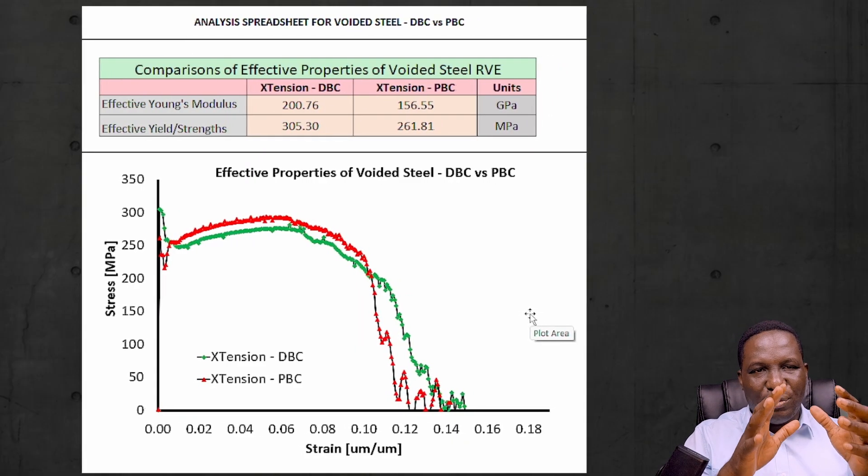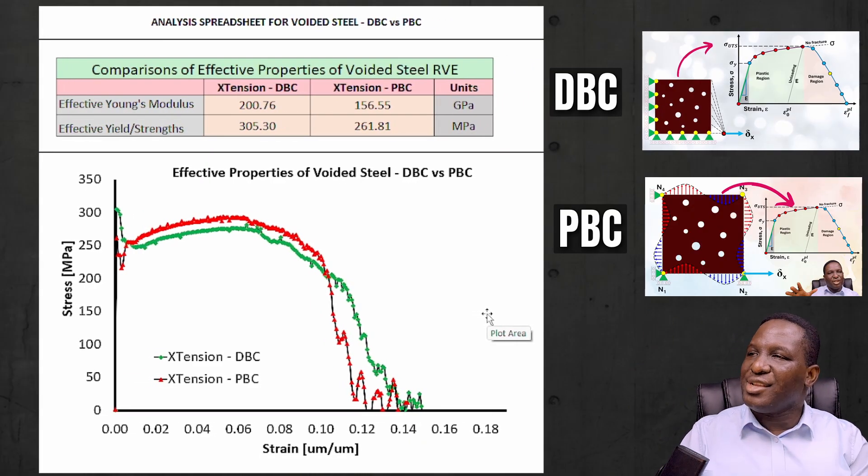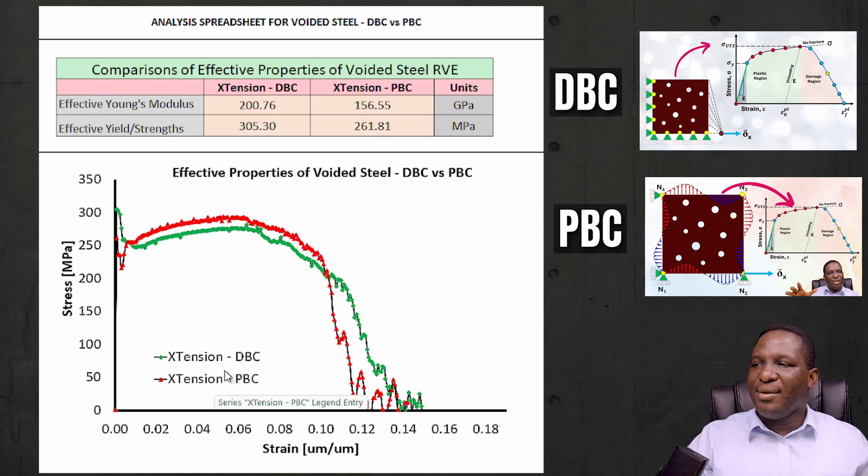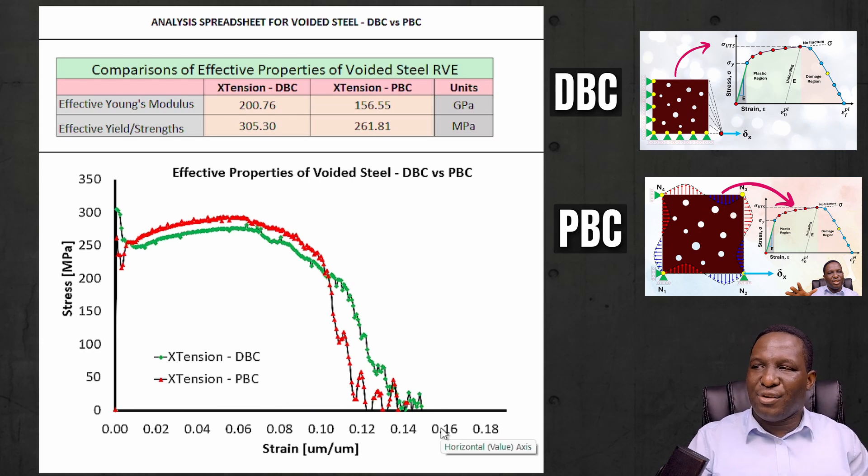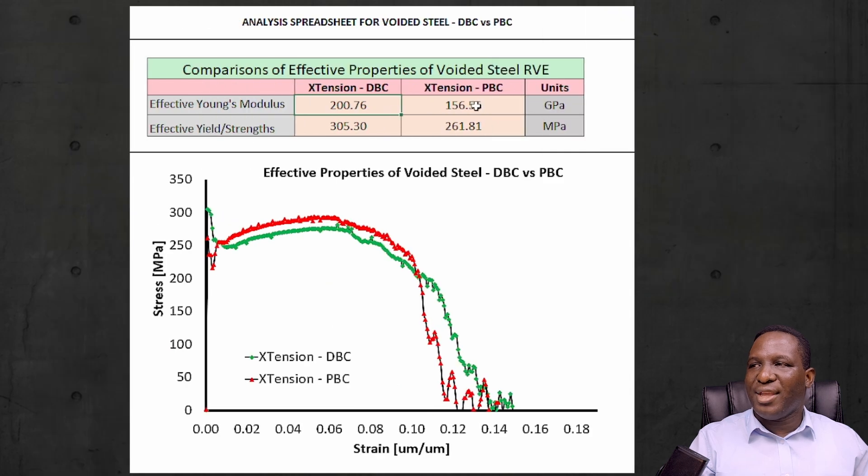We're happy with the nature of our simulations. Now we need to get the stress strain data. When you get the stress strain data, this is the sort of result that you're going to get. What we have here is that the green line is for the Dirichlet based boundary condition, the red line is for the periodic boundary condition, and you can see some really interesting results. If you look at the data, the Young's modulus for the Dirichlet boundary condition is 200, the Young's modulus for the PBC base is 156. Considering that this material is made of steel that has a Young's modulus of 210 gigapascals, the DBC seems a little bit more stable.